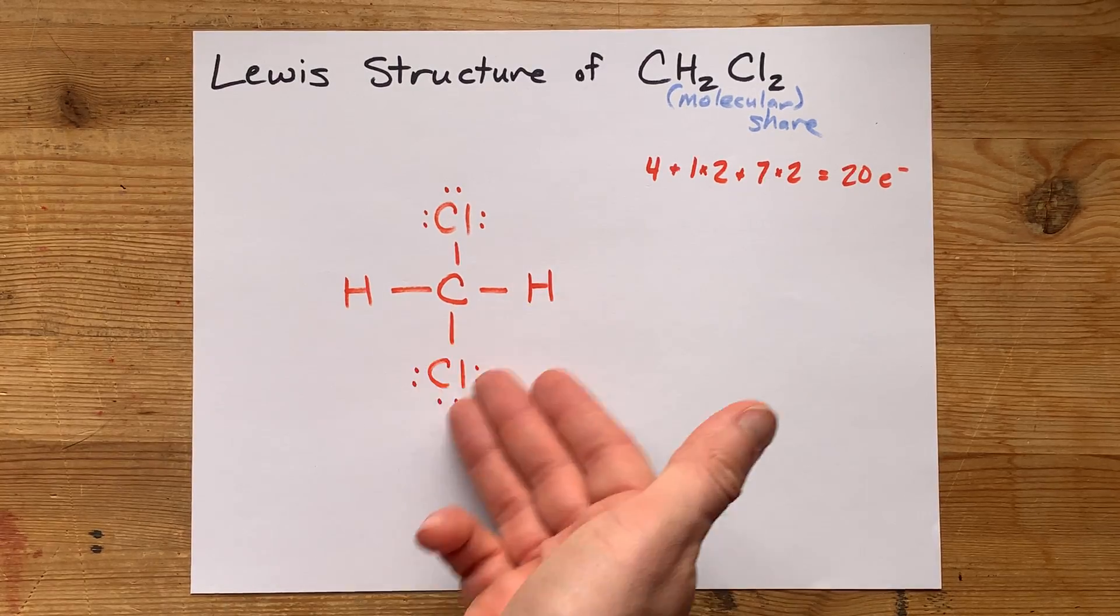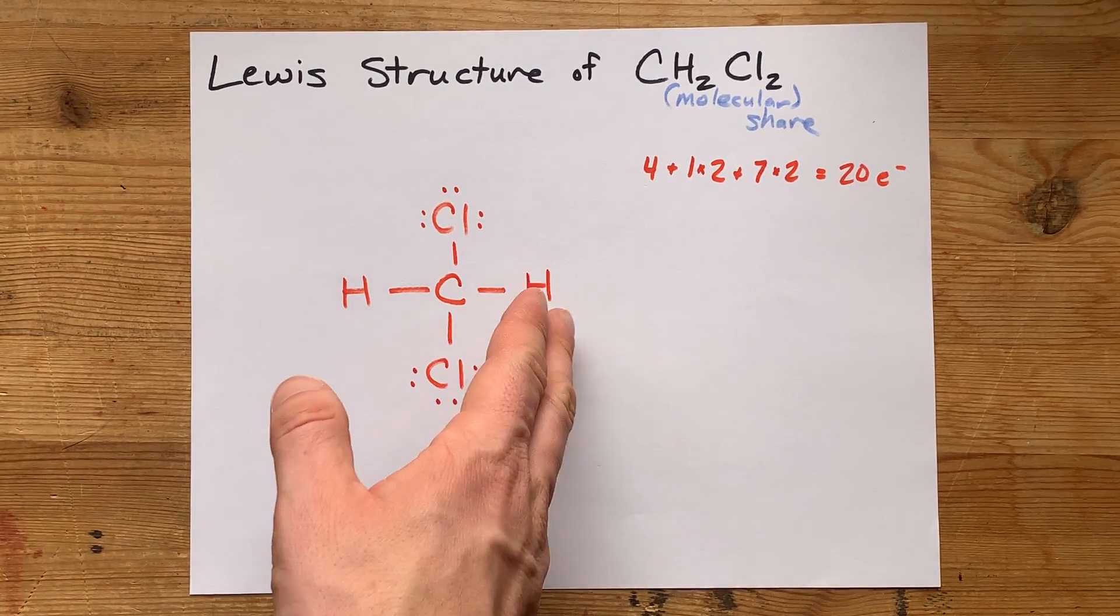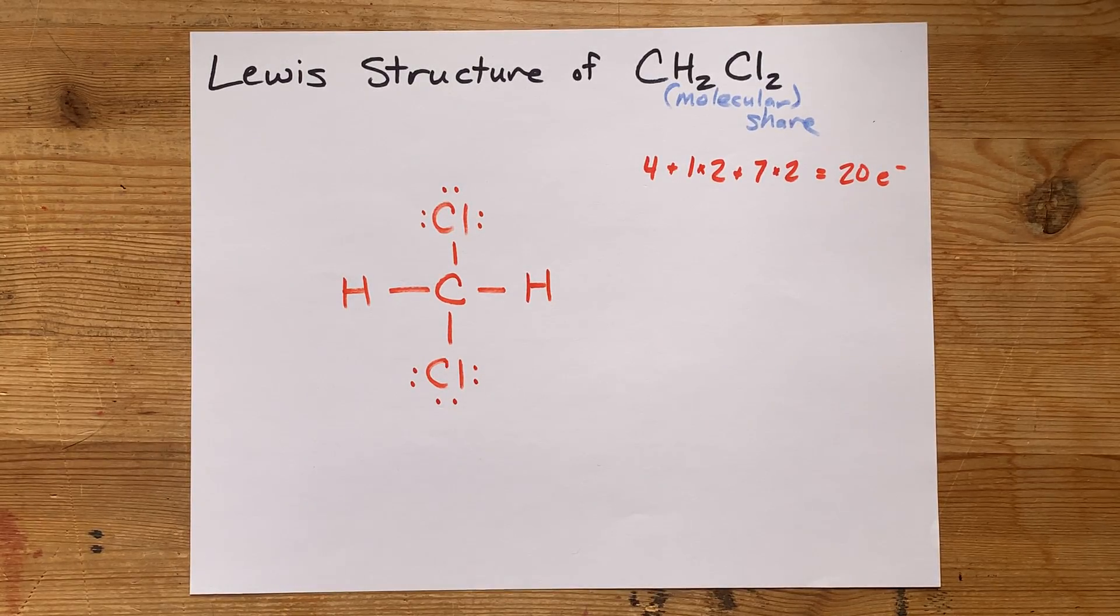This is my complete Lewis structure for dichloromethane, CH2Cl2. Thanks for being with me and best of luck.